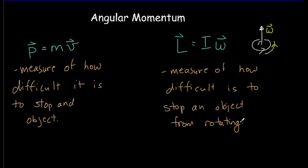So naturally, it's going to be harder to stop an object if its rate of rotation is very fast. And it's also going to be hard to stop an object from rotating if it's got a lot of mass, and that mass is concentrated far from the axis of rotation.